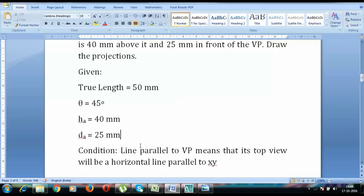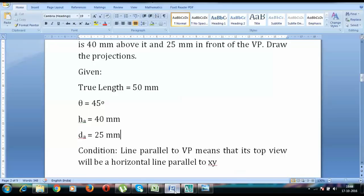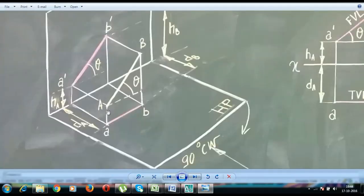So I'll show you this figure. Please watch this. HA is 40 and DA is 25. So this distance over here is 40 and this distance over here is 25. Now the angle which you see right from the front is going to be 45 degrees and the true length of the line is going to be 50 millimeters.